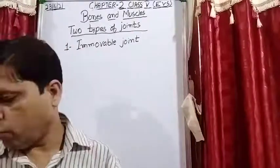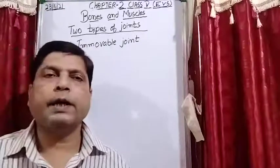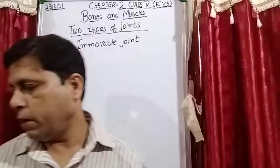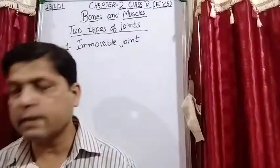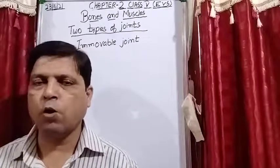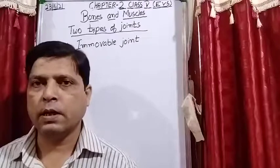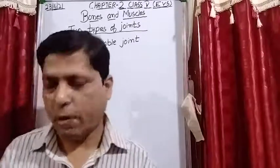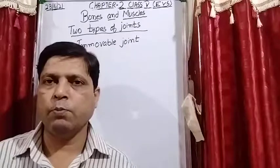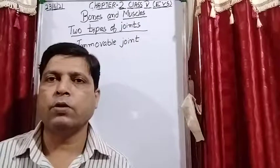Immovable joints — these types of joints are used to protect the delicate parts of the body. This type of joint you will find in the skull and teeth. There is very little or no movement in this type of joint. Our skull is made of eight flat bones, and there is no movement in the immobile joint. For example, your skull protects the delicate organ known as the brain.